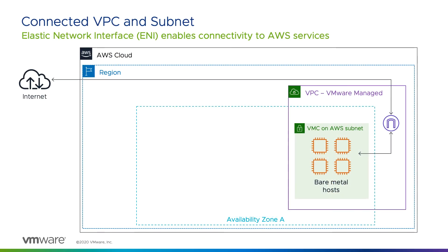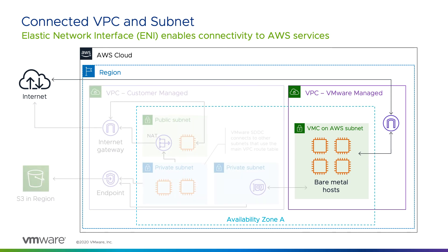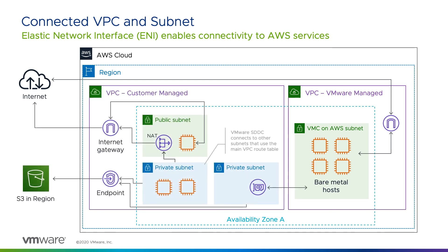When you deploy an SDDC on VMware Cloud on AWS, the underlying compute, storage, and network resources are contained in a private, VMware-managed VPC that customers do not access directly. During the deployment workflow, you will link one of your VPCs and subnets to your new environment so that your workloads running on your SDDC can easily access other AWS resources.